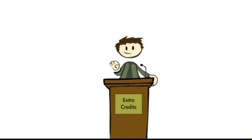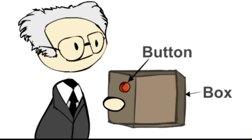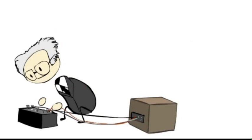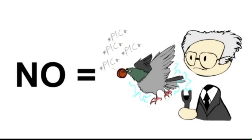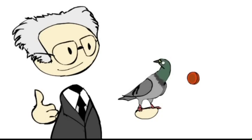Skinner created a machine — a simple box with a button — that he would put pigeons in. When the pigeons pecked at the button, the machine would give them food. He then hooked the box up to a recording device to track how often the pigeons pecked the button. This was groundbreaking because pecking the button is active — it's not just an automatic reaction to stimuli, it involves making a decision. This is called operant conditioning.